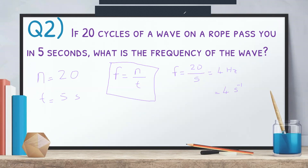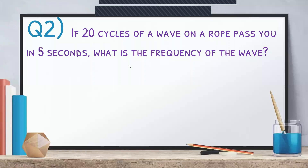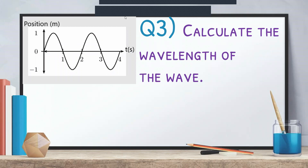Question three: we have a position-time graph. Calculate the wavelength. The total distance for all waves is 12 meters. Wavelength means length of one wave. First, count the number of waves: a positive pulse and a negative pulse make one wave, another positive and negative make two. We have two waves. Distance equals 12 meters for two waves. Lambda equals distance over n, so lambda equals 12 over 2, giving 6 meters.